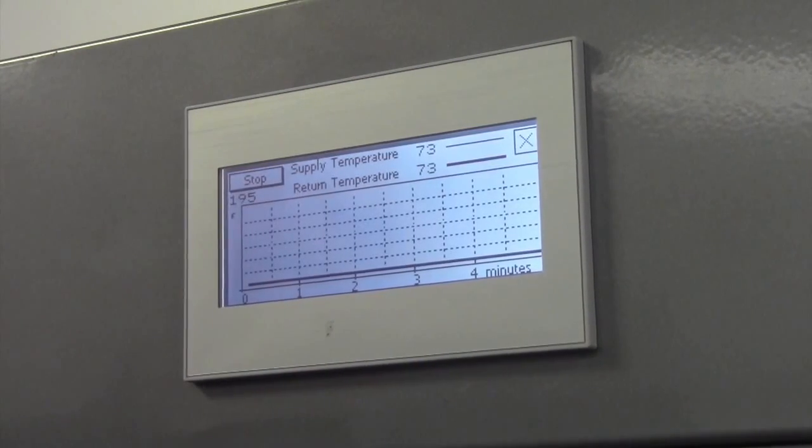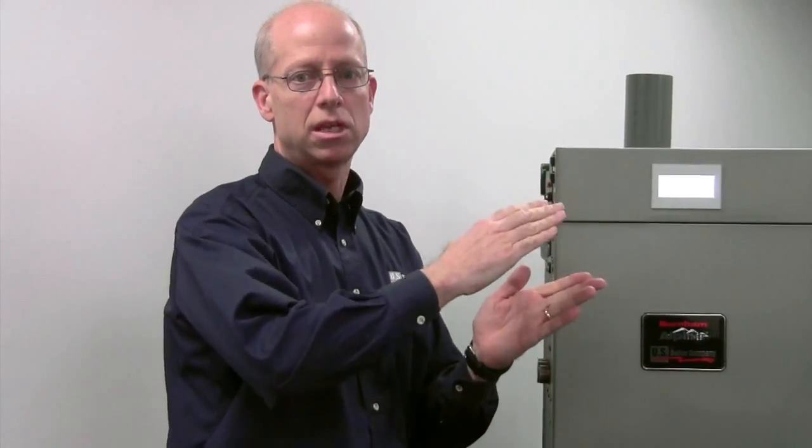I can also show a two-pen supply and return graph. So now we can really see the delta T, which will become more important to us as we push for greater efficiency.